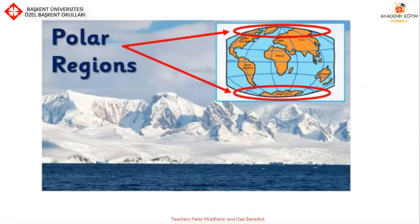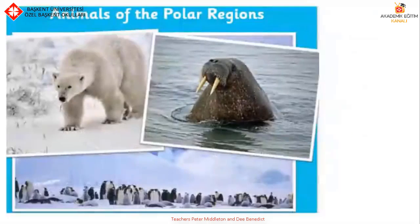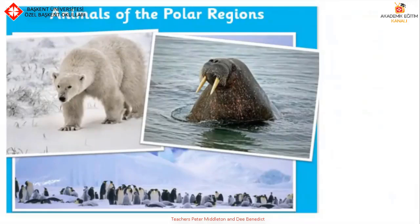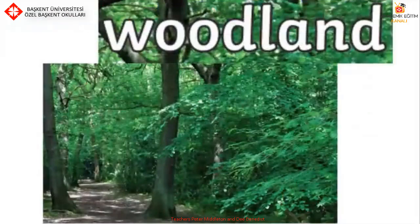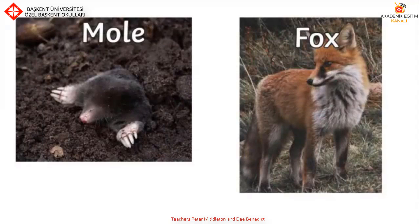These are the polar regions at the top and the bottom of the globe. What animals can be found here? You can find a polar bear, penguins and a walrus. What other animals can you find? This is a woodland. What animals can be found in the woodland? You can find a mole and a fox. What other animals are there?